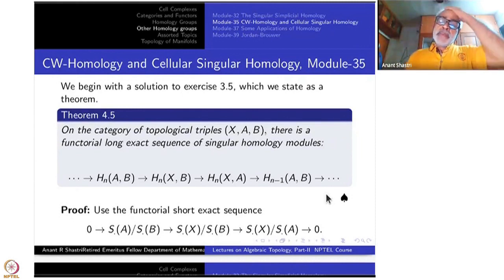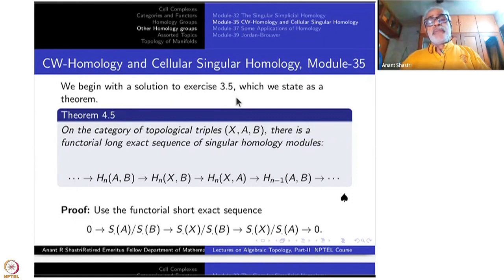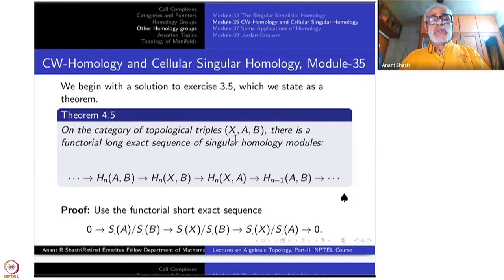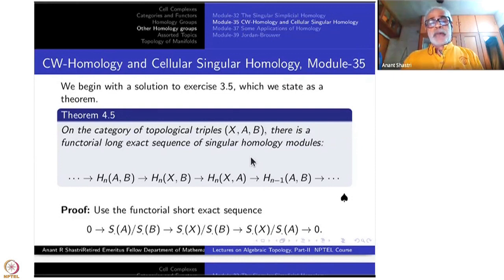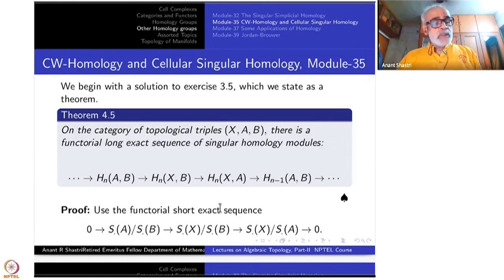Before that, let me recall a result that we put as an exercise earlier — exercise 3.5. I will now state it as a theorem and indicate a proof, which is actually a one-line proof. On the category of topological triples X, A, B, there is a functorial long exact sequence of singular homology modules: H_N of AB, H_N of XB, H_N of XA, and then the delta homomorphism back to H_{N-1} of AB, and so on. I have not bothered to write down all the maps; slowly you will know the homomorphisms by context.